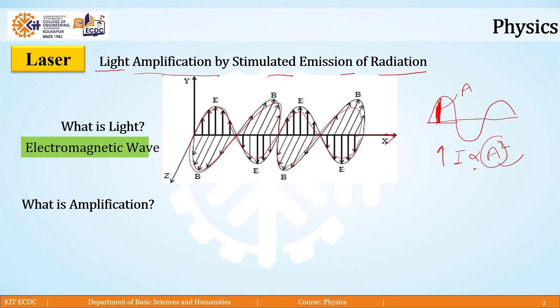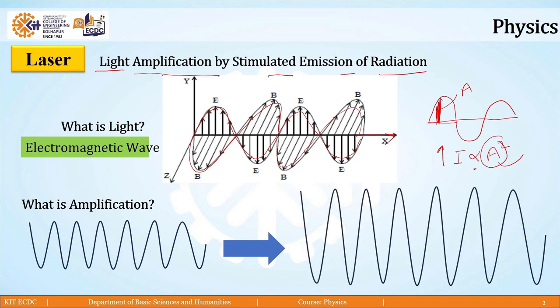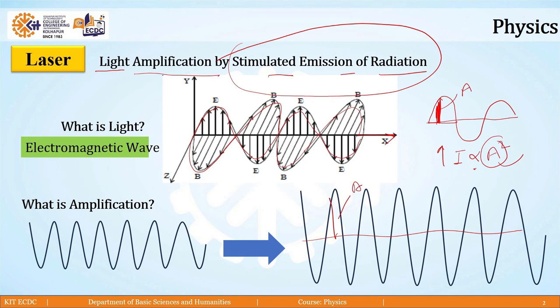So, what is amplification? Amplification simply means increasing the amplitude of a wave by a certain value. There are a number of ways to increase that. Particularly in the case of laser, the light is amplified and this amplification of light is done by stimulated emission of radiation, which is the basic principle for the generation of laser.